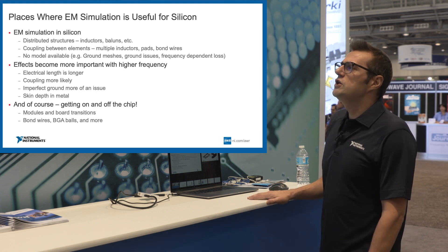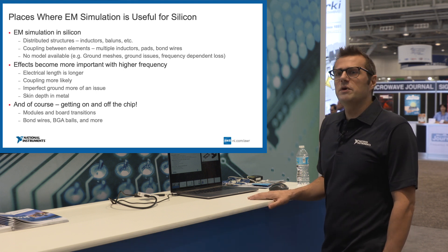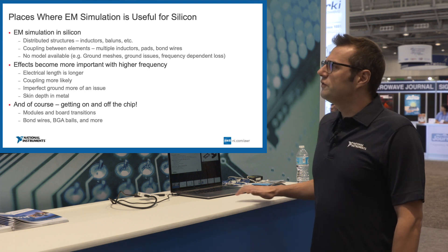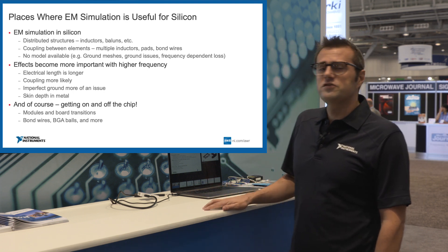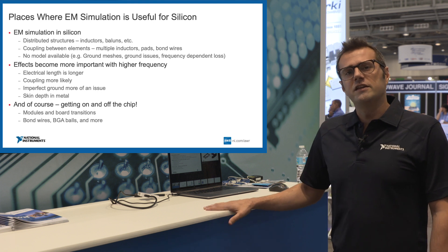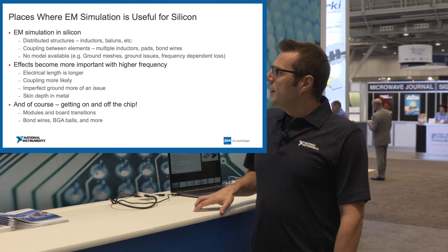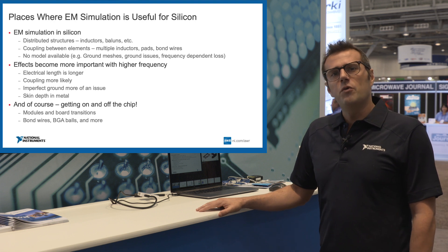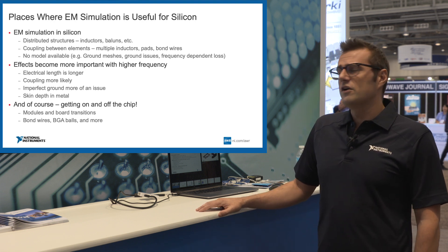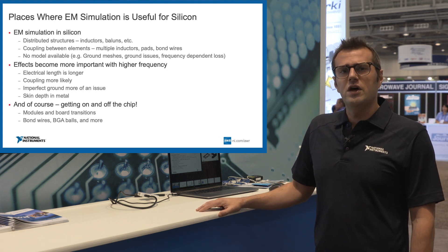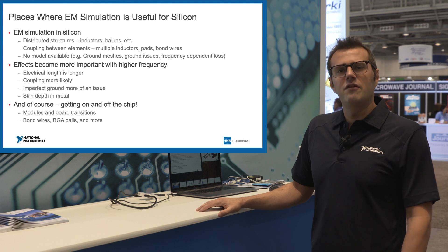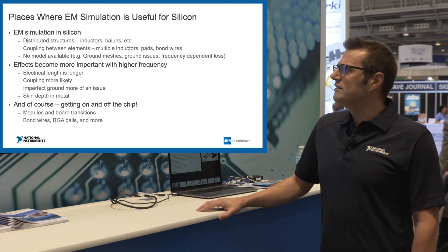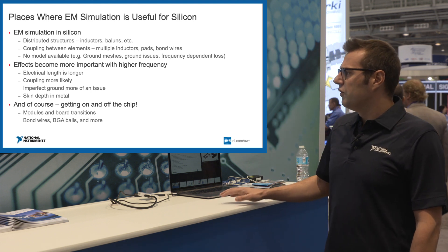So where should we actually use electromagnetic simulation in silicon design? It can be used for distributed structures like inductors and baluns. It can also be used for cases where you don't have a model available — for example, if you want to simulate a ground mesh and there's no circuit-level model available, you need to analyze it within EM software.